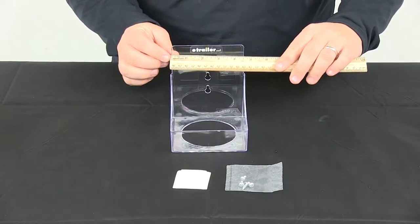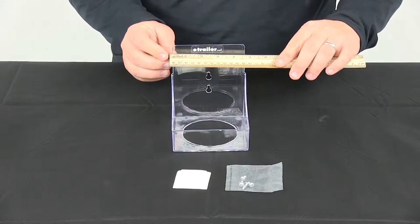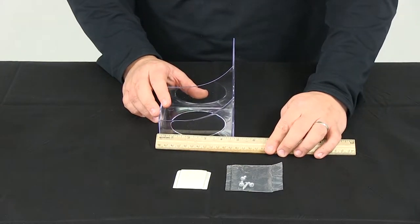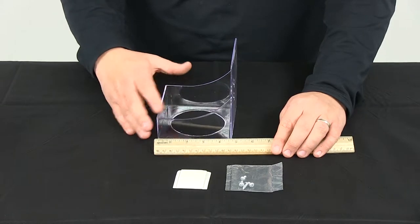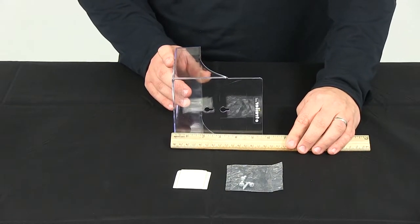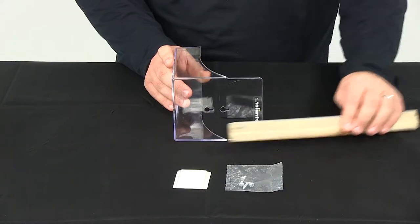The overall width is going to give us a measurement about four and three-quarters of an inch. The overall depth is going to measure about four and three-quarters of an inch. And then the overall height here on the back at the mounting location is going to measure about five and a half inches.